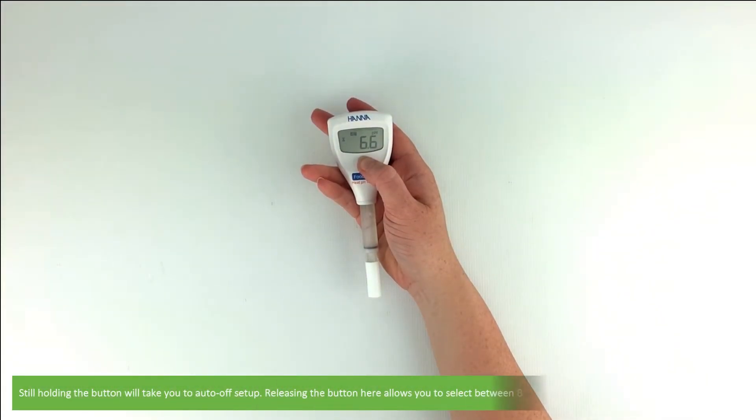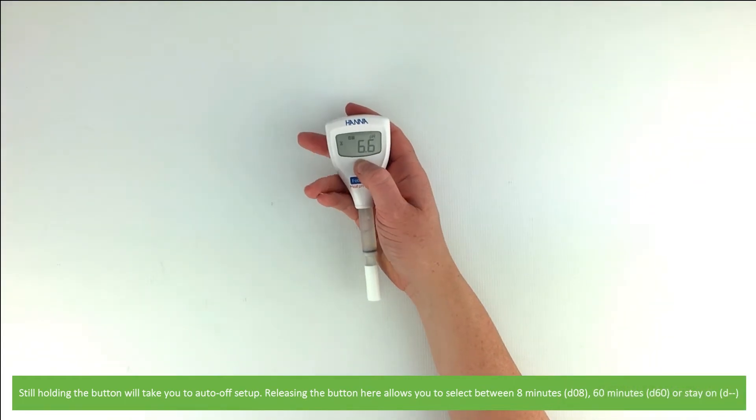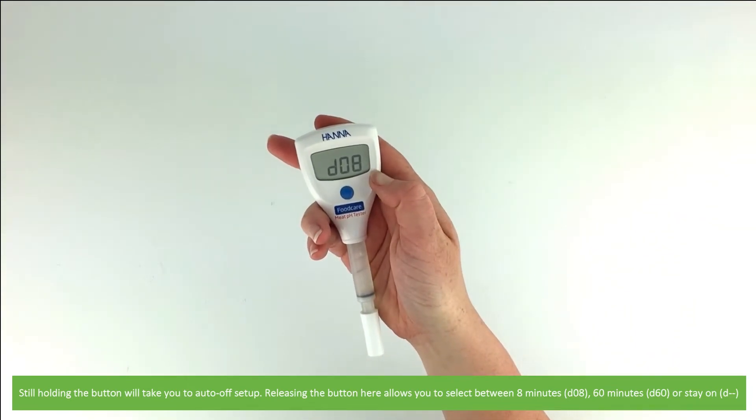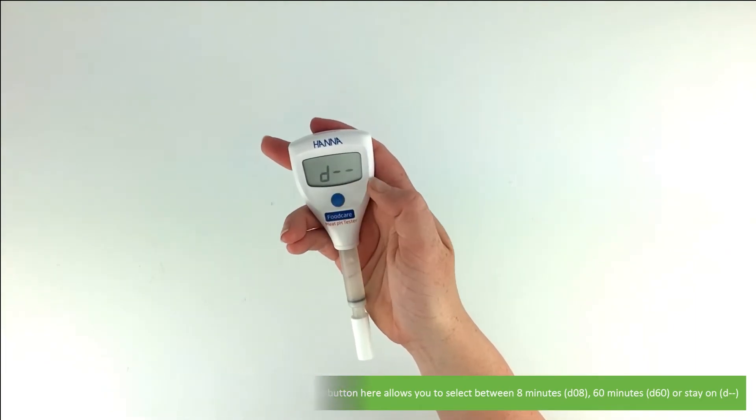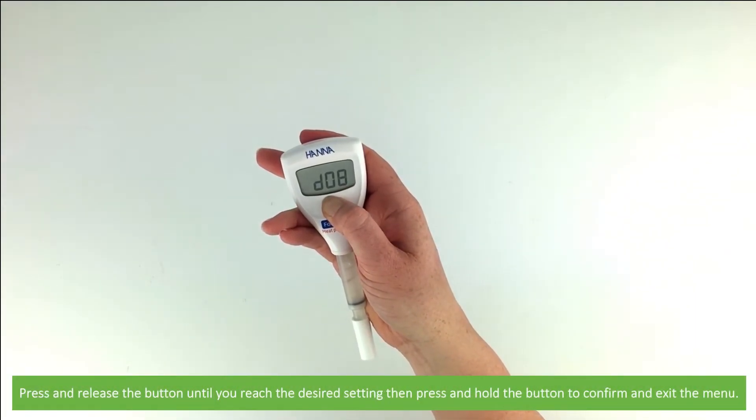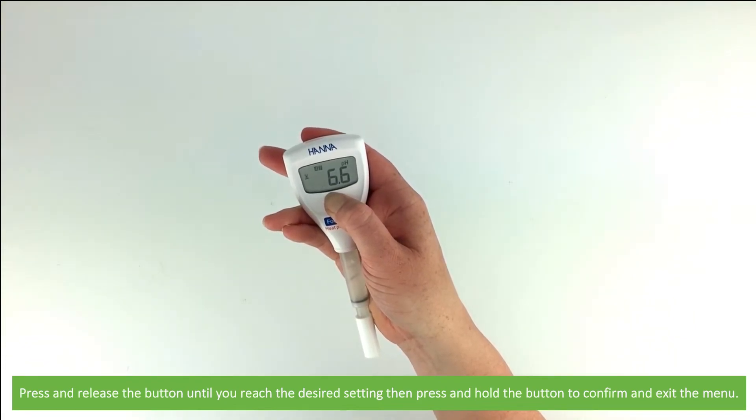Holding the button down for longer will take you to auto-off setup. Releasing the button here allows you to select between auto-off after 8 minutes, 60 minutes, or for the device to remain on. Press and release the button until you reach the desired setting, then press and hold the button to confirm and exit the menu.